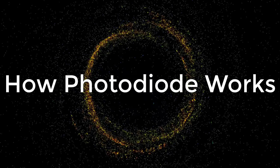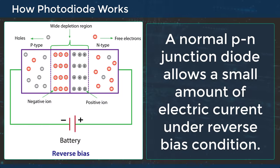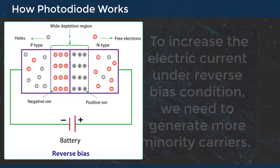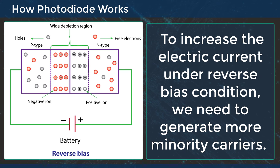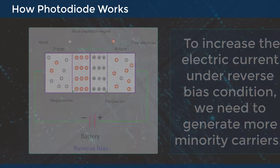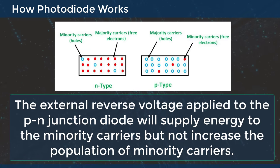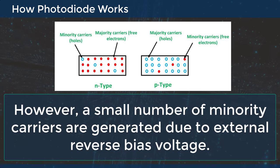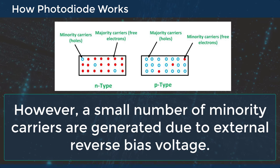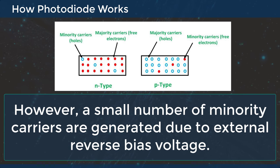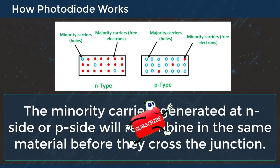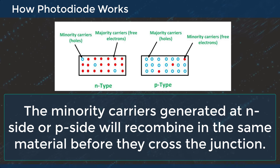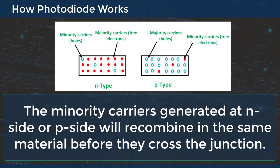Let's see how the photodiode works. A normal PN junction diode allows a small amount of electric current under reverse bias condition. To increase the electric current under reverse bias, we need to generate more minority carriers. The external reverse voltage applied to the PN junction diode will supply energy to the minority carriers but will not increase the population of minority carriers. However, a small number of minority carriers are generated due to the external reverse bias voltage. The minority carriers generated at the N side or P side will recombine in the same material before they cross the junction.